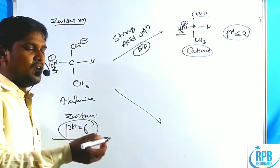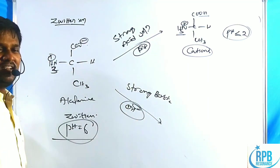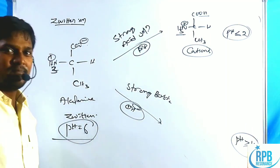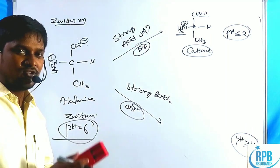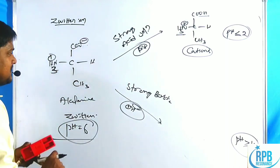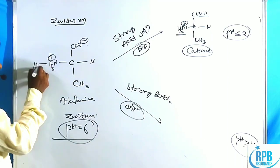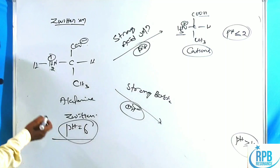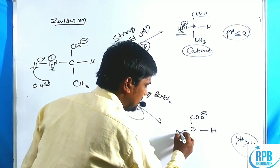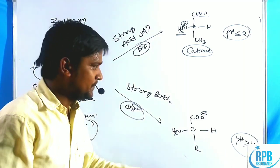When a strong base (OH−) is added instead, the pH rises above 7. The solution abstracts a proton from the ammonium cation (NH3+), converting it back to NH2. This gives COO− and NH2 — so in a basic solution with high pH, the amino acid exists as an anion.